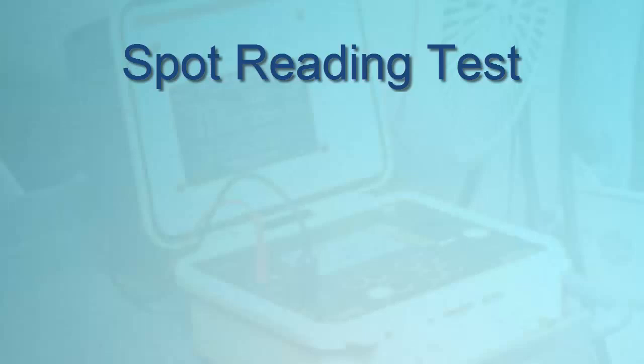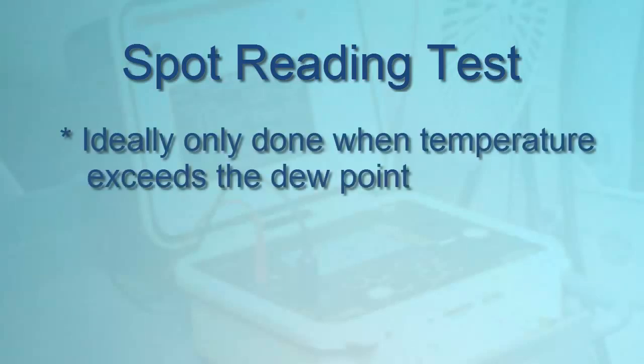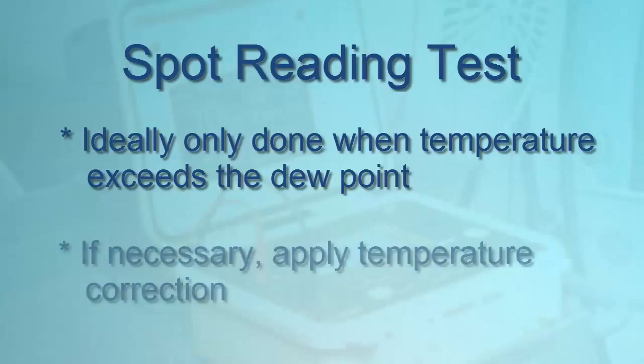To ensure your results are valid, spot testing should ideally only be performed on systems with temperatures exceeding the dew point. If tests are performed at different temperatures, carefully record the temperature of each test and apply the appropriate correction to determine what the resistance would be if the tests were performed at 20 degrees Celsius, or 60 degrees Fahrenheit.